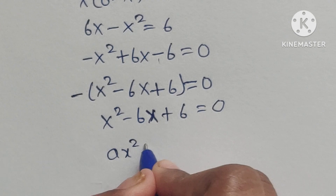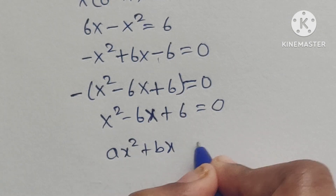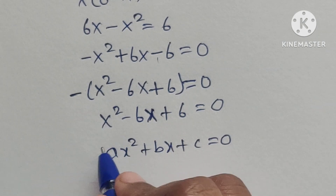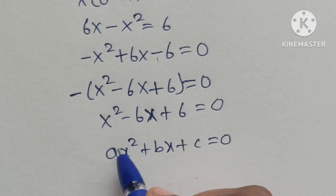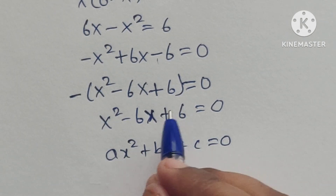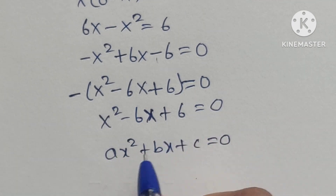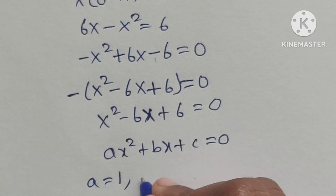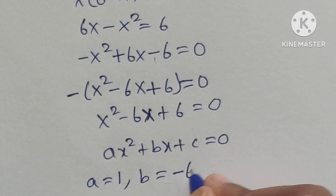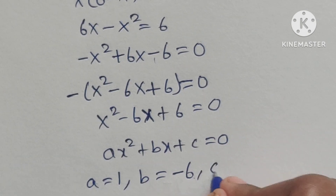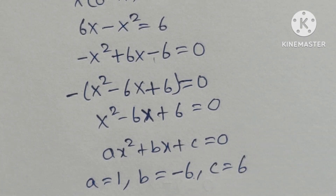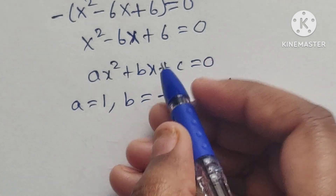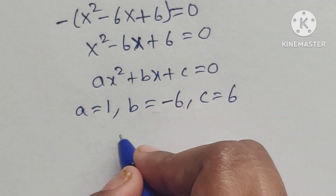This is in the standard form ax squared plus bx plus c equals 0. Comparing the two equations, we identify the values: a equals 1, b equals minus 6, and c equals 6.